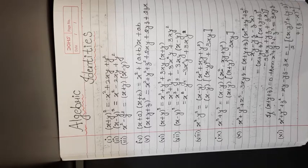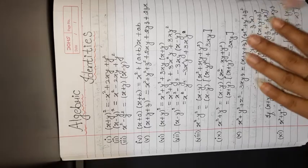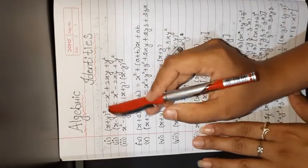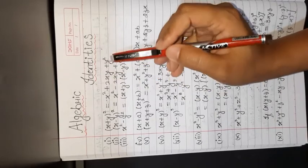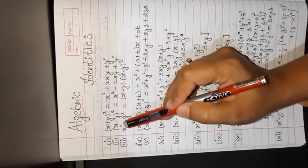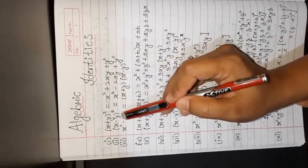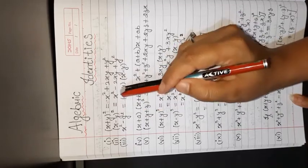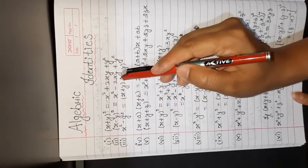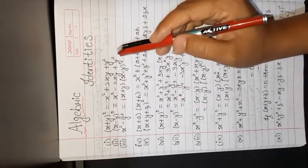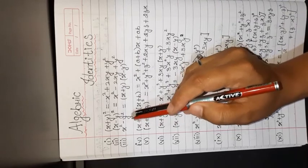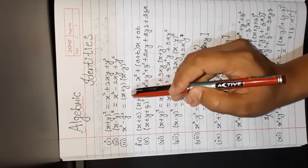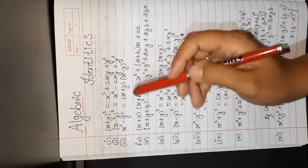Some useful algebraic identities are: First, (x + y)² = x² + 2xy + y². Second, (x − y)² = x² − 2xy + y². Third, x² − y² = (x + y)(x − y).